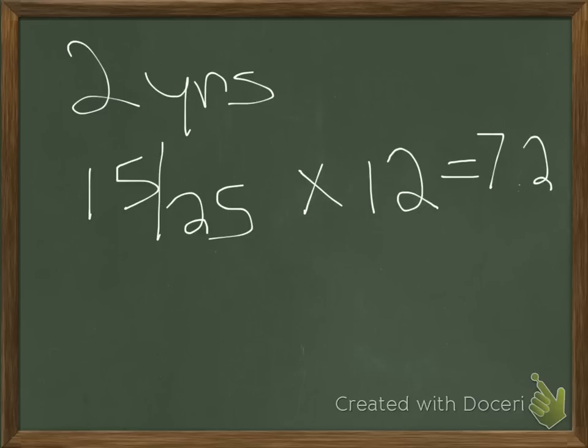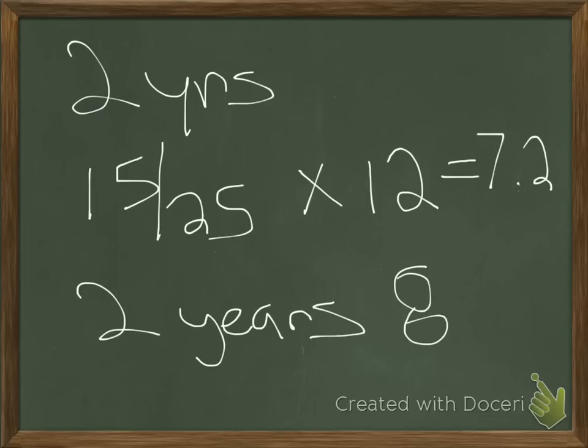So to me, what I would put for an answer is two years and eight months because you did not pay it back until that eighth month. At 7.2, sure, you had, but I want the whole number. So two years, two whole years and eight months, your initial investment has been paid back.